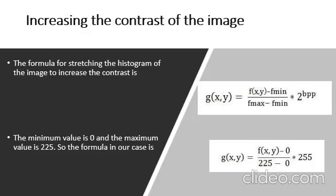So the formula for stretching the histogram of the image to increase the contrast is: g(x,y) = [f(x,y) - fmin] / [fmax - fmin] × 2^(bits per pixel).